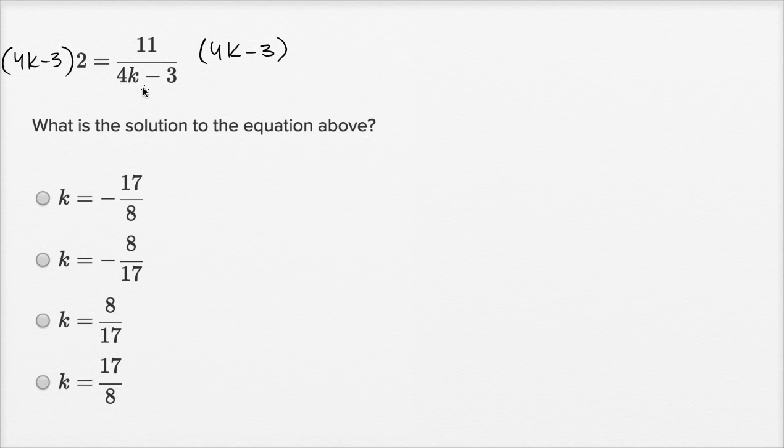It gets the four k minus three out of the denominator because four k minus three divided by four k minus three, as long as we assume four k minus three isn't equal to zero, that's just going to cancel out and be equal to one.